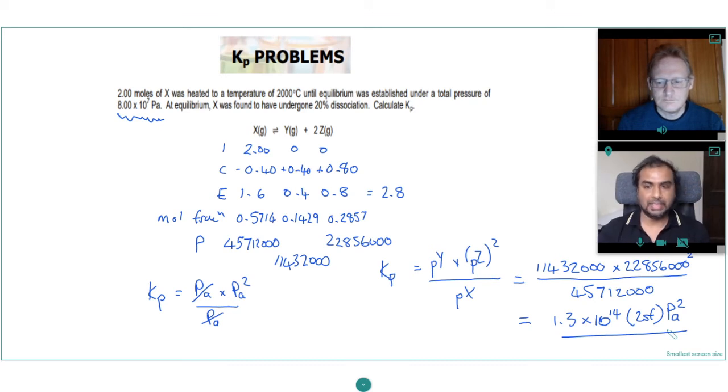That's probably why you have to work out the units in every case. Yes. Where you've got different moles on either side of the equation, you will end up with units of Kp. The pressures won't cancel. So here we've got three moles on the right-hand side of the equation and one mole on the left-hand side. So definitely a bigger numerator.